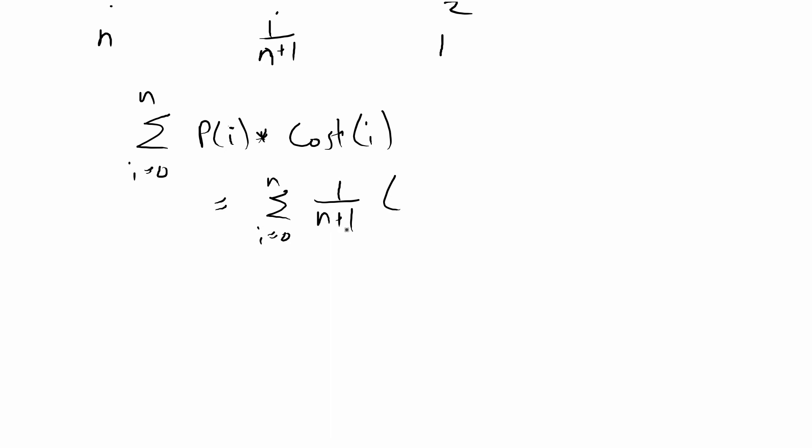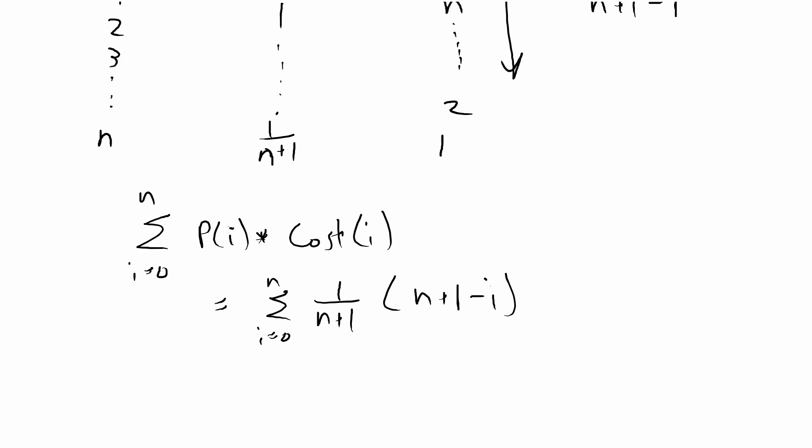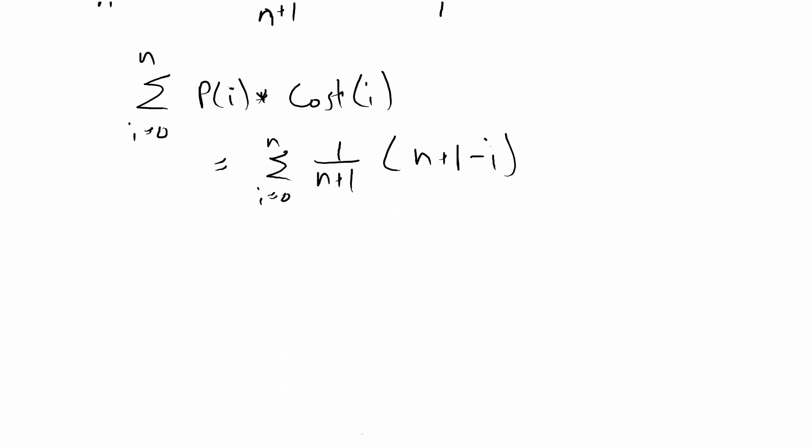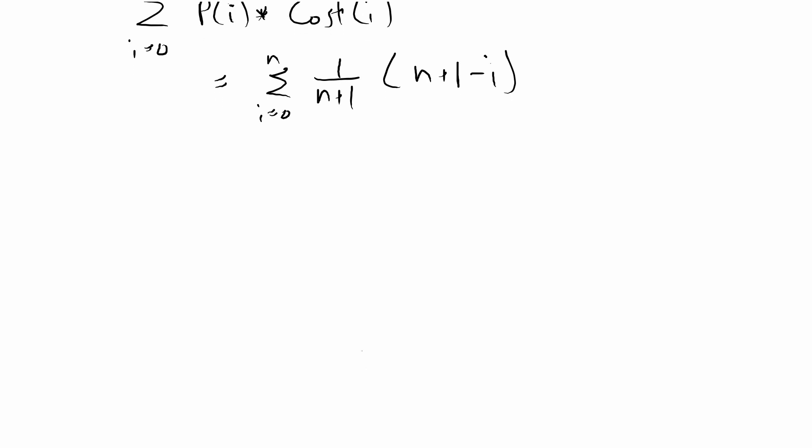It's going to be 1 over n plus 1 times n plus 1 minus i, and it depends on the formula - it always changes depending on what the problem is asking you. The end result we want to have in big O notation, so our variable that we want to consider is n, even though in here it's a constant. You want to rewrite this and get rid of the i so that you have it in just n's, and that way you can find the big O notation of the n's.